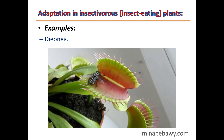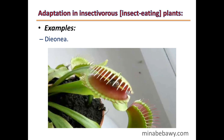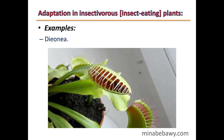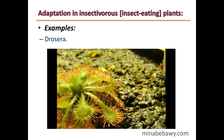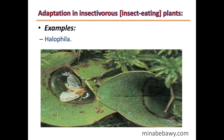Examples of insectivorous plants: Dionaea (Venus flytrap), which can be seen catching an insect. The second example is Drosera, also catching an insect to absorb nitrogen from it. The final example is Halophilia. This is the end of Lesson 2. Thanks for watching.